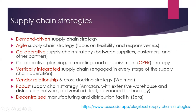Then there is the vertically integrated supply chain, where the main firm or manufacturer is engaged in every stage of supply chain operation. Then vendor relationship and cross-docking strategy, for example as used by Walmart. Then the robust supply chain strategy as used by Amazon, with extensive warehouses, a distribution network, a diversified fleet, and use of advanced technology.